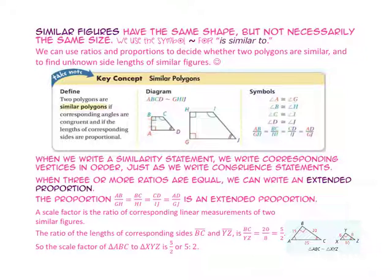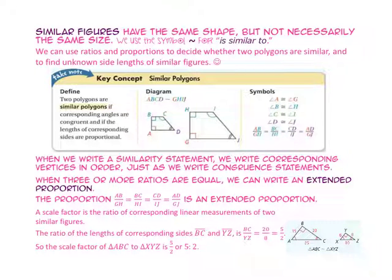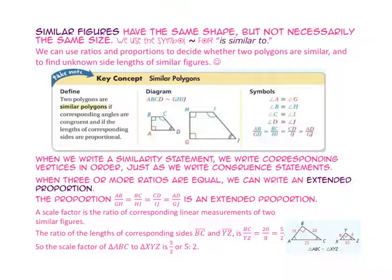Notice that angle A is congruent to angle G, angle B is congruent to angle H, angle C is congruent to angle I, and angle D is congruent to angle J. In order for sides of polygons to be proportional, the corresponding sides such as side AB and side GH must have an equivalent ratio to sides BC and HI, side CD to side IJ, and side DA to side JG. When we write a similarity statement, we write corresponding vertices in order just as we write congruent statements. When three or more ratios are equal, we can write an extended proportion such as this one here.